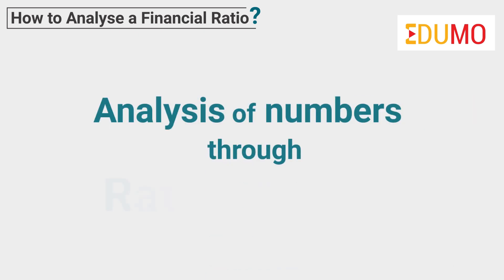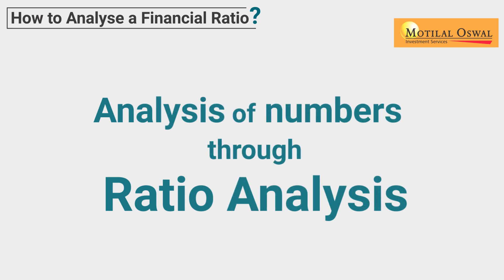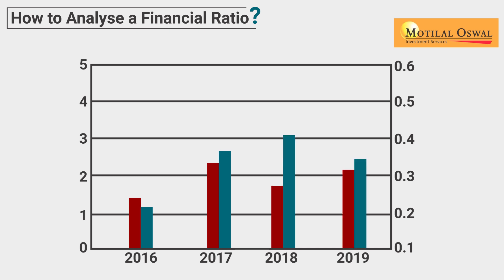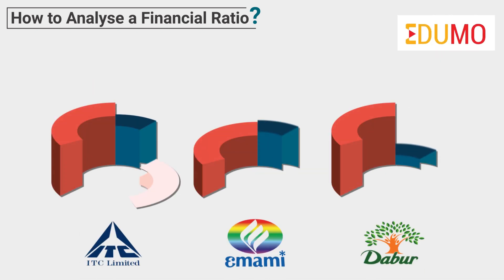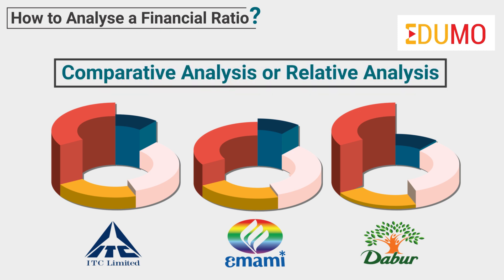Now that we have a broader sense of which ratios indicate what, we can move forward on how to analyze these numbers. Financial ratios alone give us a number about what has happened in the past. To get a better picture, we need to compare these ratios with similar ratios of different companies under the same sector. This is also known as comparative analysis or relative analysis of companies.